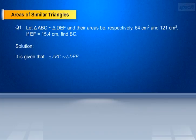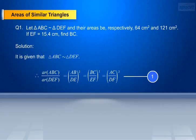Solution. It is given that triangle ABC is similar to triangle DEF. The ratio of areas: AR of ABC by AR of DEF equals AB/DE whole square, equals BC/EF whole square, equals AC/DF whole square. Make it as equation 1.